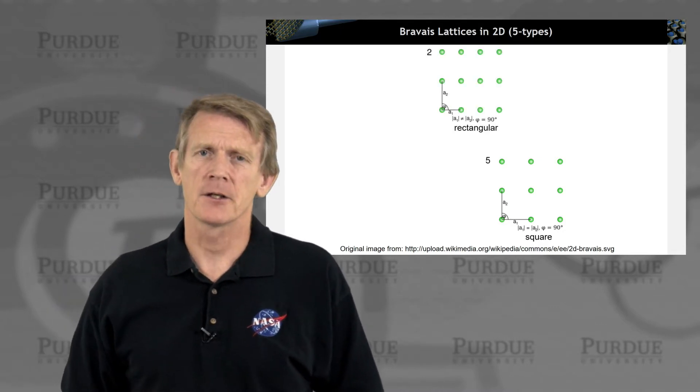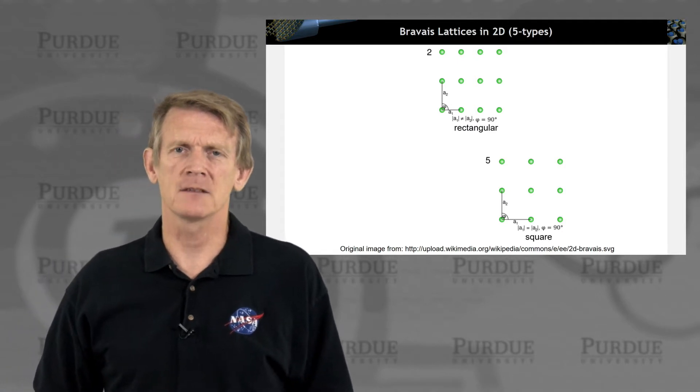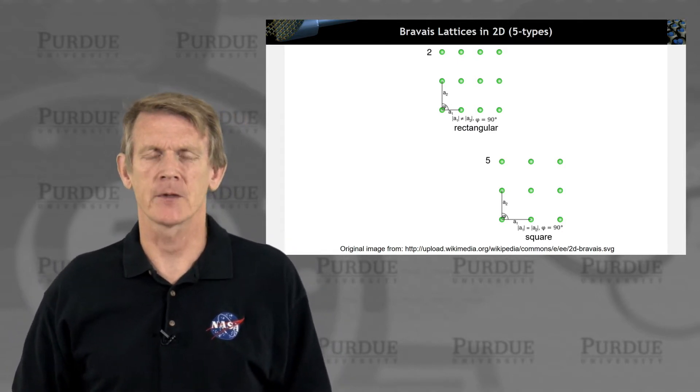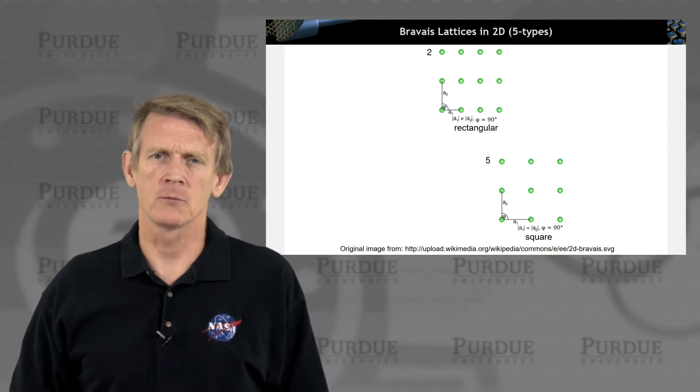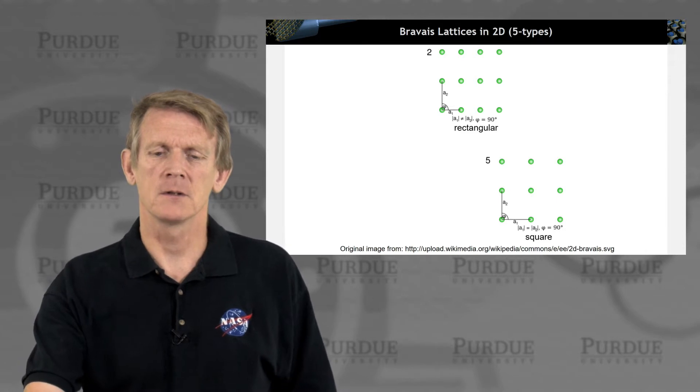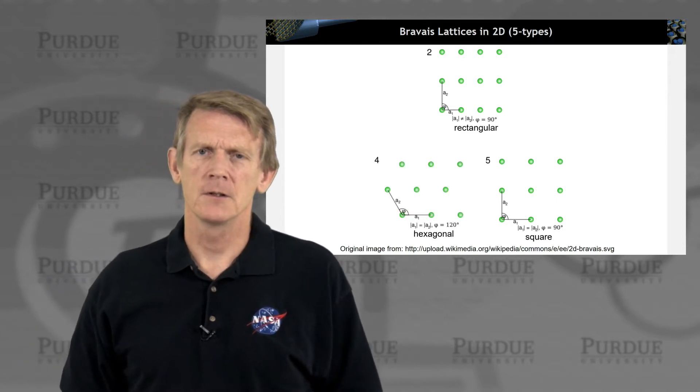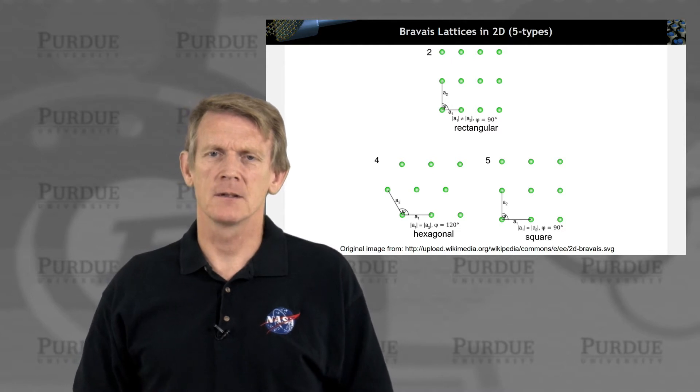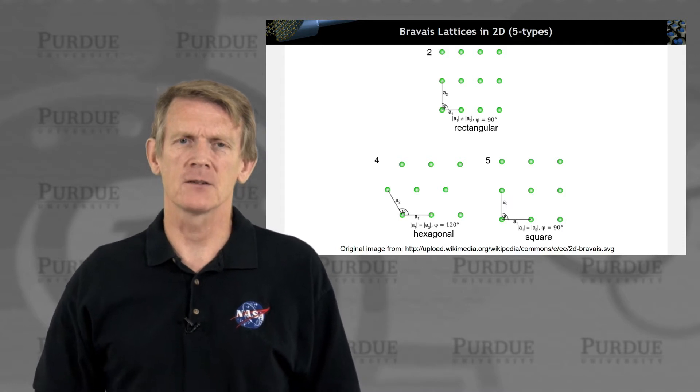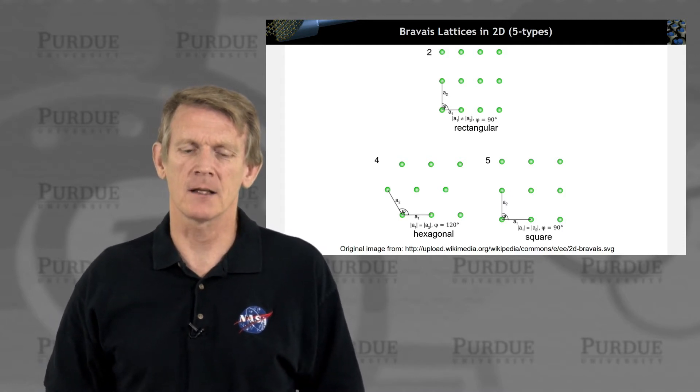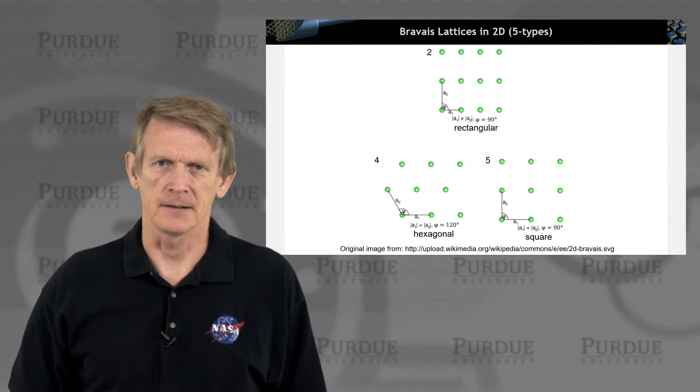You can make the same similar arrangement and change the length of one of the basis vectors and make it rectangular and keep the angle still the same at 90 degrees. That would make it a Bravais lattice of rectangular. Or you could, for example, compare to the square, change the angle to 120 degrees, keep the vectors A1 and A2 of the same length, and achieve a hexagonal lattice.